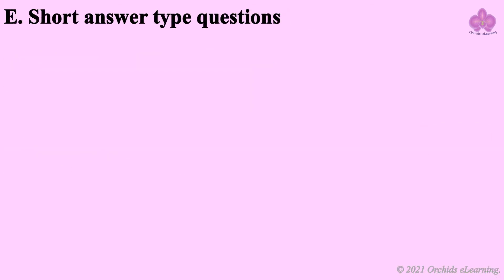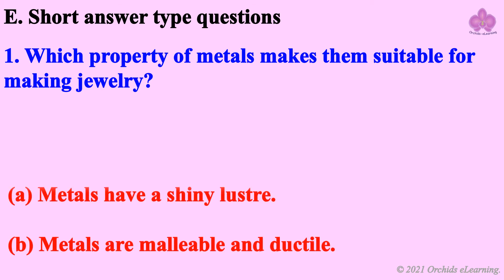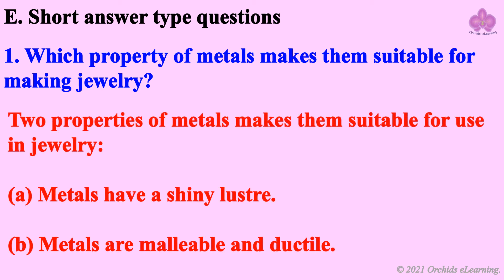Short answer type questions. Which property of metals makes them suitable for making jewelry? Two properties of metals make them suitable for use in jewelry: Metals have a shiny luster, and metals are malleable and ductile.